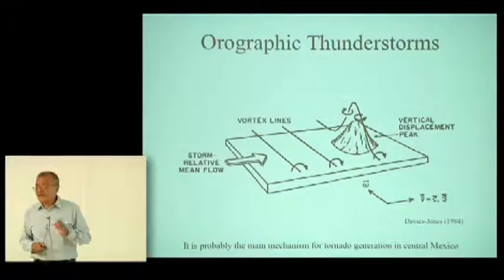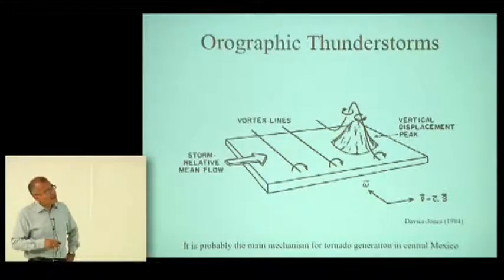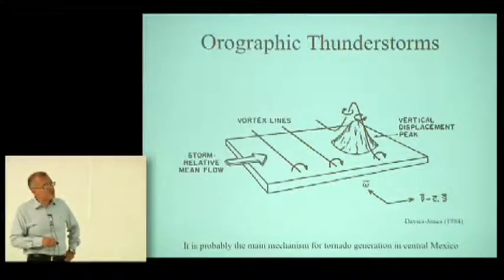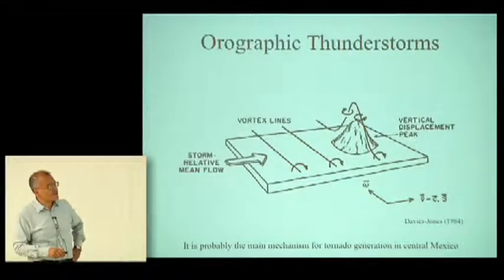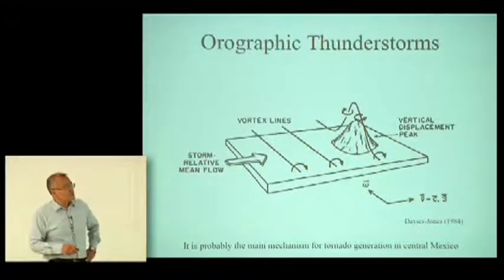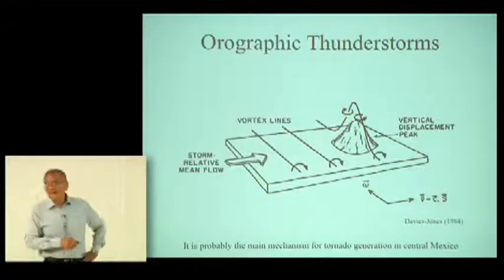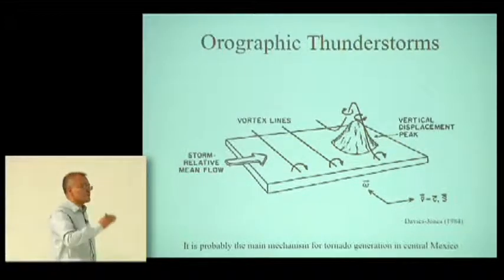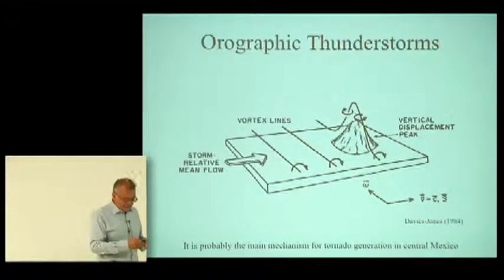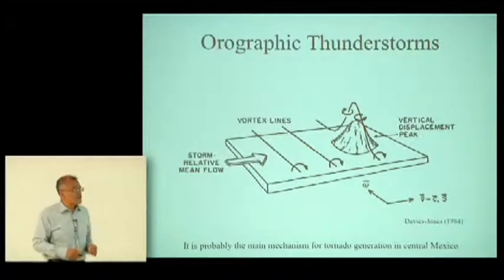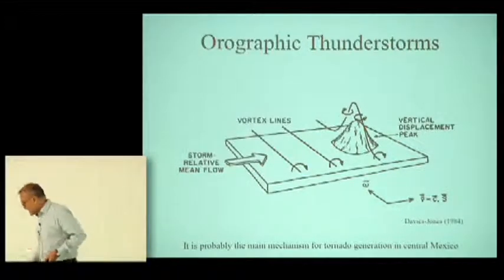The last mechanism I'm going to talk about is orographic thunderstorms. Because of the no-slip boundary condition at the bottom, we see the formation of horizontal vortex lines. But when this flow encounters some topography, the air rises and the vortex lines are again tilted to become vertical. I believe this is most probably the mechanism for the formation of tornadoes in central Mexico, and I'm going to show this in a little while.